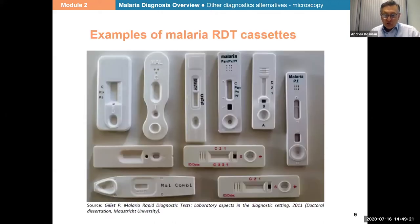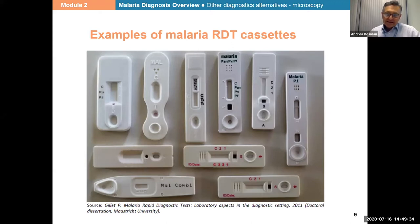This photo shows many different types, different shapes, different forms of RDTs — all of them have a well where we put the blood and a different well where we put the buffer. Some tests have a single well for both, but the majority have two separate wells.